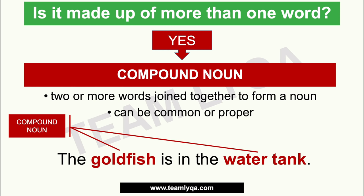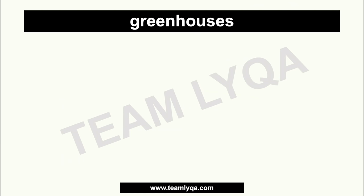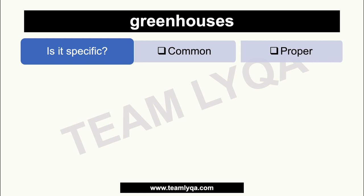I've organized these noun types into categories to help form associations. Now let's test them using the word 'greenhouses.' For the first pair — specificity — is it a specific noun? No, because it's not capitalized and it could be any greenhouse. So the answer is that it's a common noun.